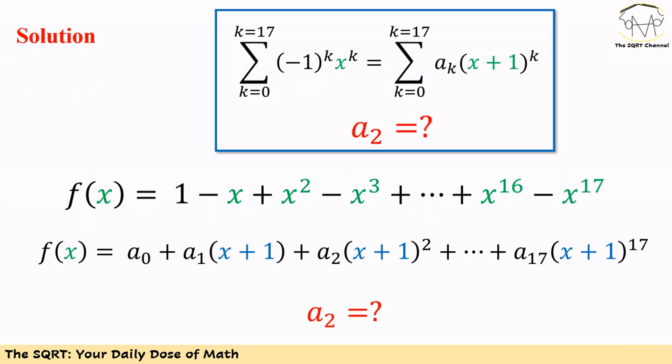To solve this problem, let's start with expanding both equations that we have. For the first one we can write f of x as 1 minus x plus x to the power of 2 minus x to the power of 3, up to x to the power of 16 minus x to the power of 17.